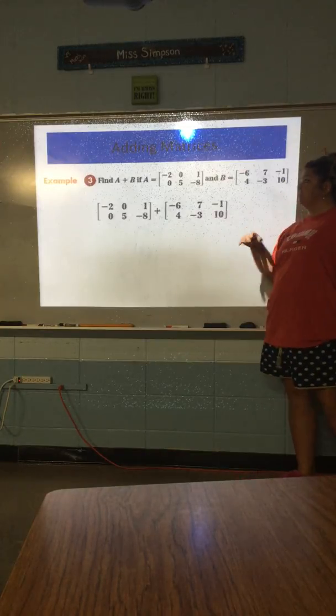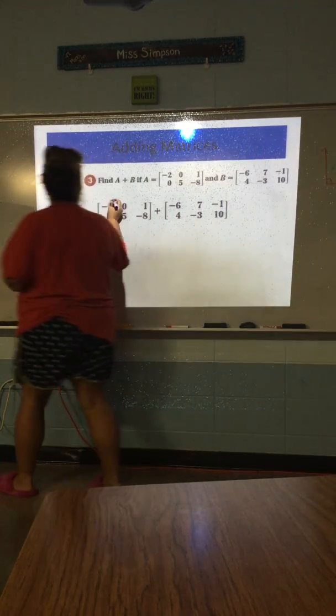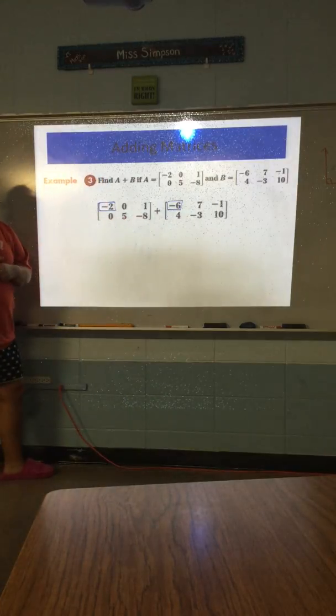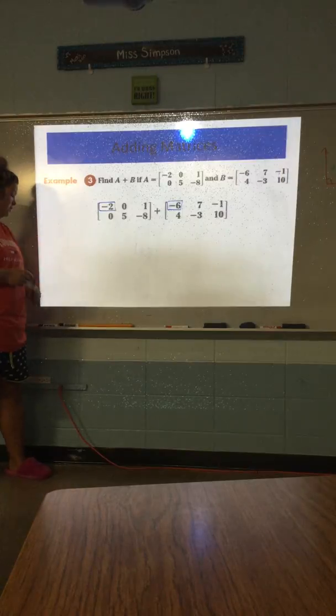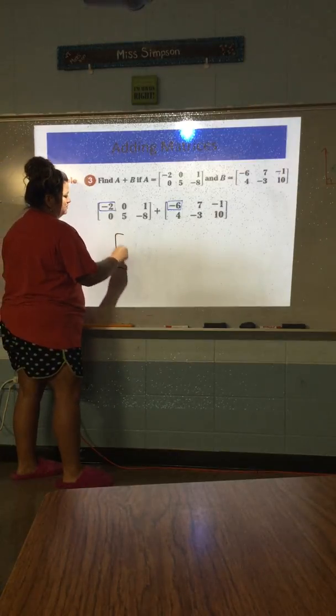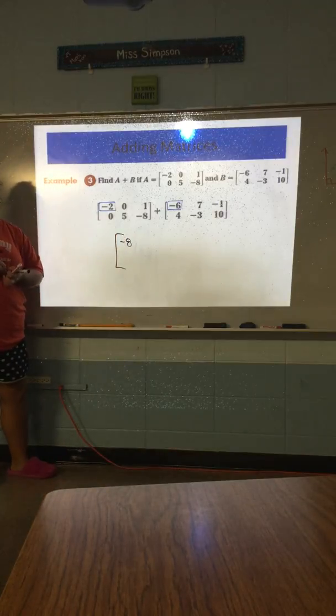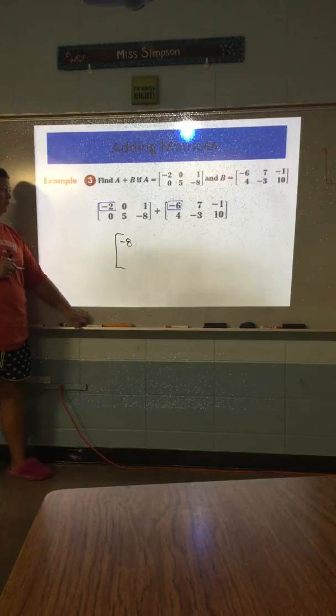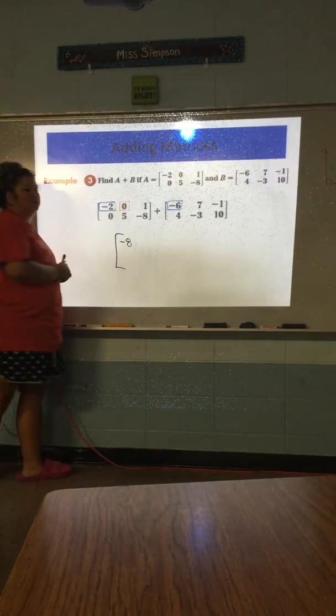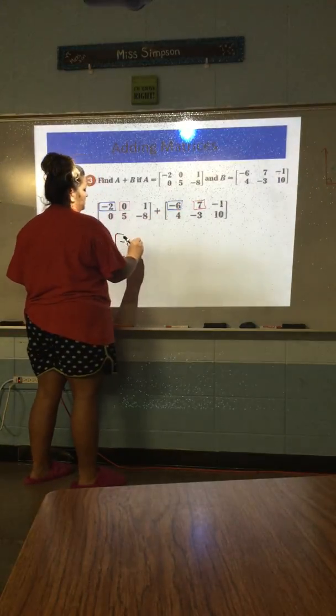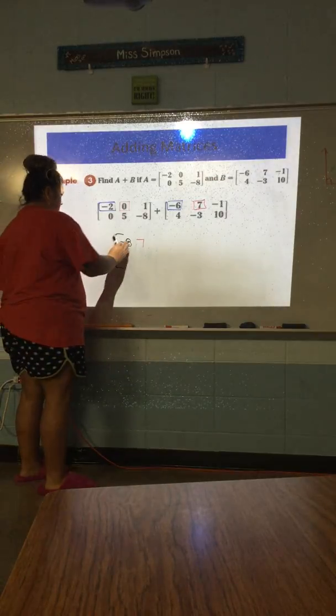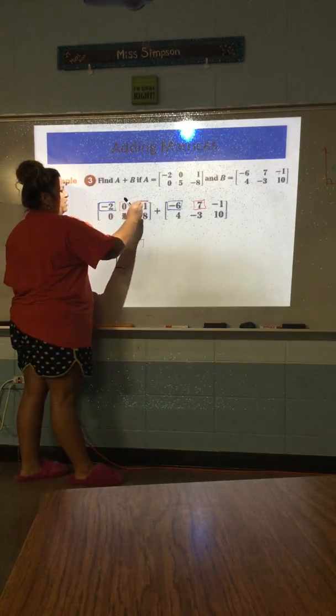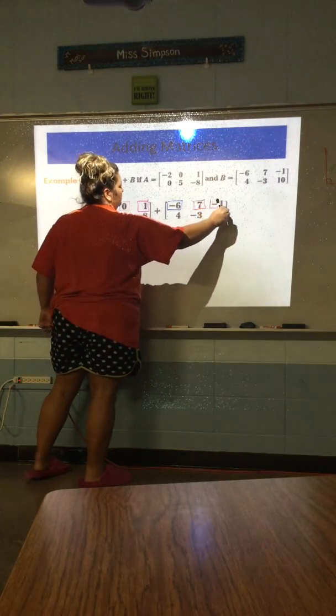When we go to add these, we're going to add spot for spot. So what I mean by that is, what is in the same spot as negative two over there? Negative six. Negative six. Okay. So whenever I add those together, because this is negative two plus a negative six, what do I get? Negative eight. And it goes in that same exact spot. Okay? I added these in the top. Top left. So then I'm going to move over. Zero. What's in the same spot as zero? Seven. Which would be? Seven.